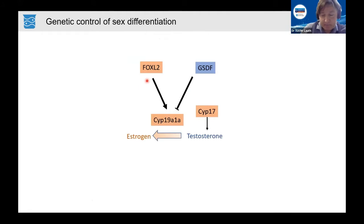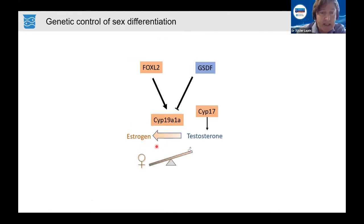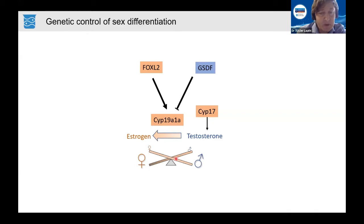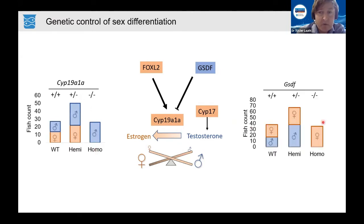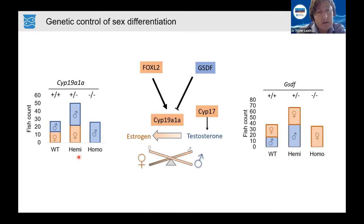In fish, sex is ultimately controlled by the relative concentration of oestrogen. High concentration of oestrogen leads to female development; low concentration leads to male development. A key enzyme in this balance is the aromatase CYP19A1A, which is active in females and repressed in males through the action of other genes, including GSDF. We tested this model in tilapia by inactivating the corresponding genes, and found that CYP19A1A is indispensable for female development and GSDF for male development. Fish completely inactivated for those genes are sex-converted into either all-male or all-female, while wild-type and hemizygous fish have a normal sex ratio.